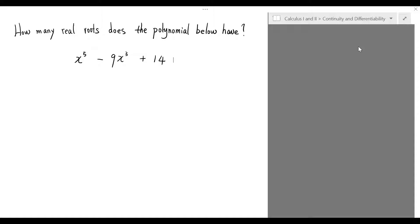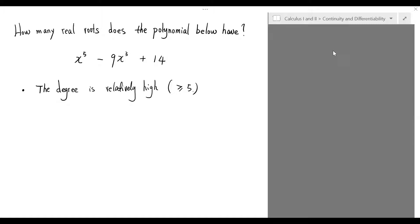Before we dive into the solution of this problem, let's talk about a few points of interest. First of all, we observe that the degree of this polynomial is relatively high — greater than or equal to 5. In fact, in the early 19th century, it was proved that polynomial equations of degree above 4 do not have an algebraic formula to express the solutions. On the other hand, it is not quite practical to solve this problem by hand with a numerical method. Therefore, we'd better look for a way that could get around this difficulty.